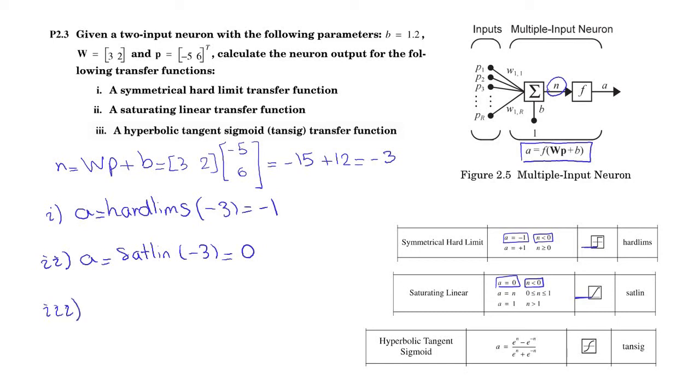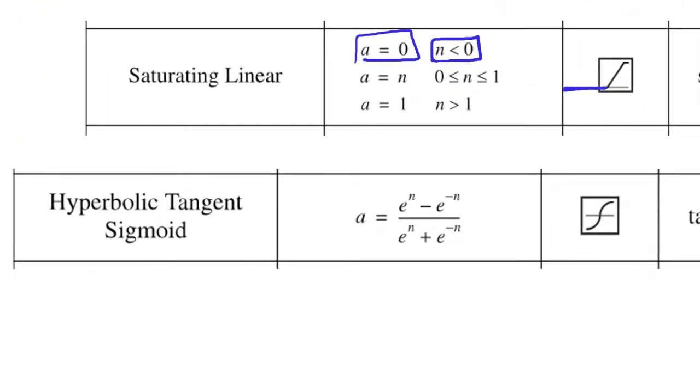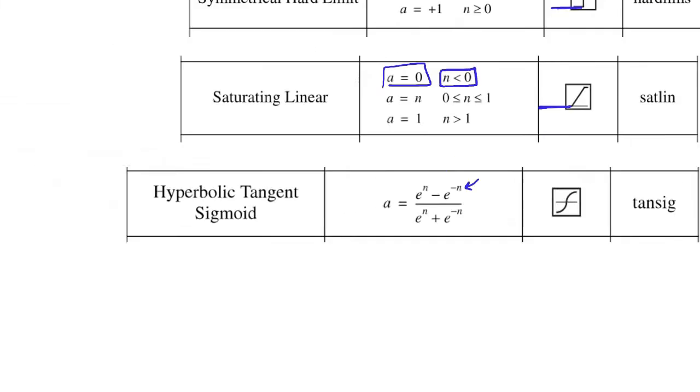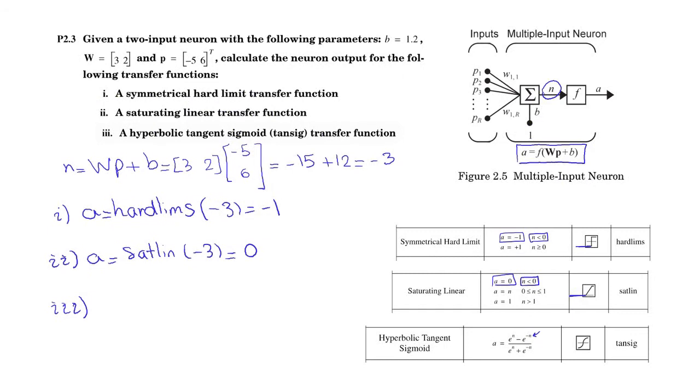And for the last one, as this function, we are just going to substitute N. So, it will be equals minus 3 equals e to the power of minus 3 minus e to the power of positive 3.